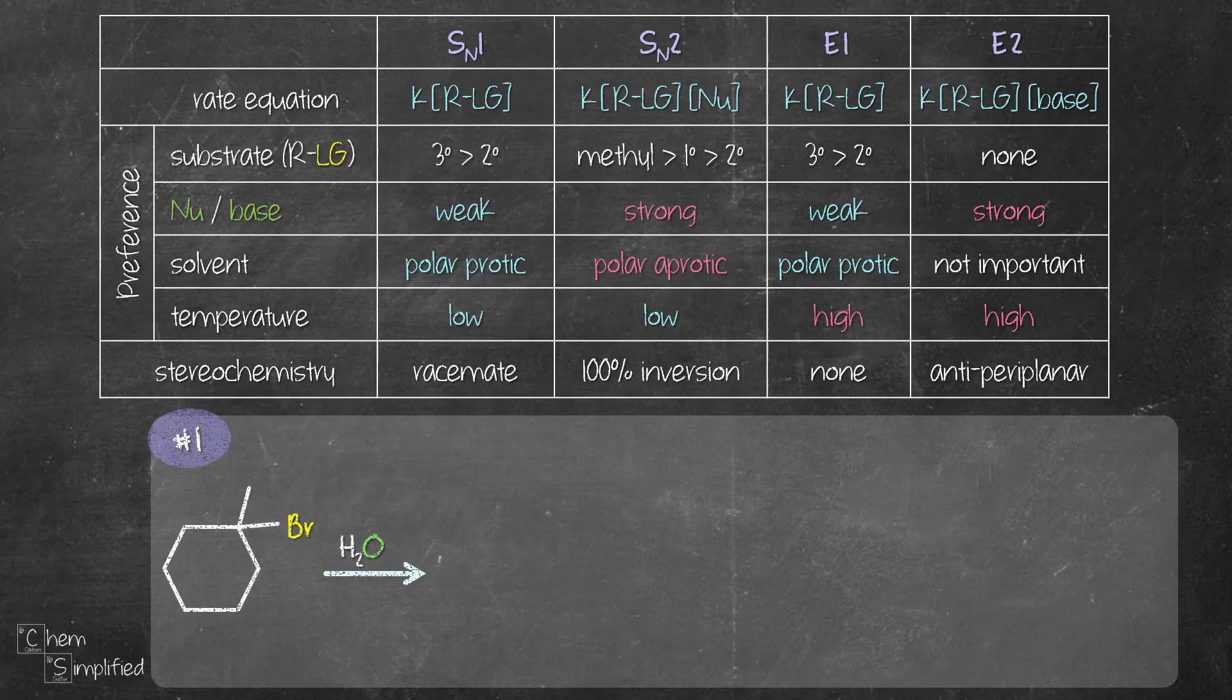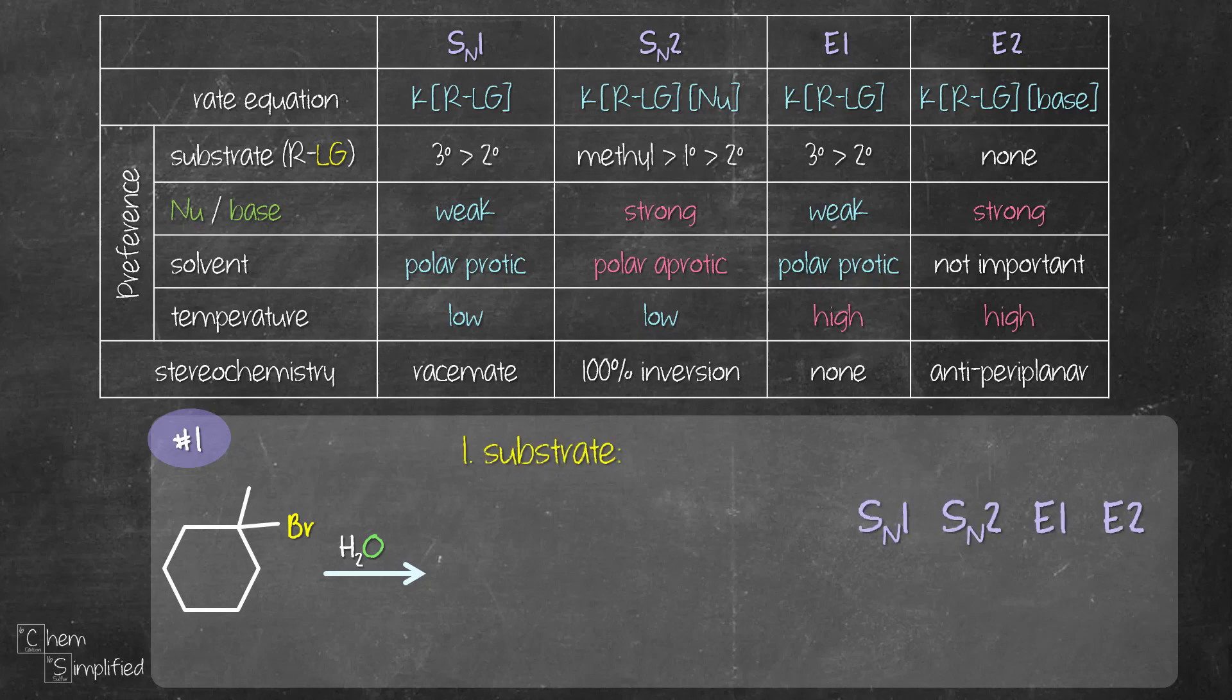Our first example, we have water added to 1-bromo-1-methylcyclohexane. Which mechanism will dominate? The first question is the type of substrate. It's a tertiary alkyl halide. That means we're gonna rule out SN2 because tertiary alkyl halide is too sterically hindered for an SN2 to take place.